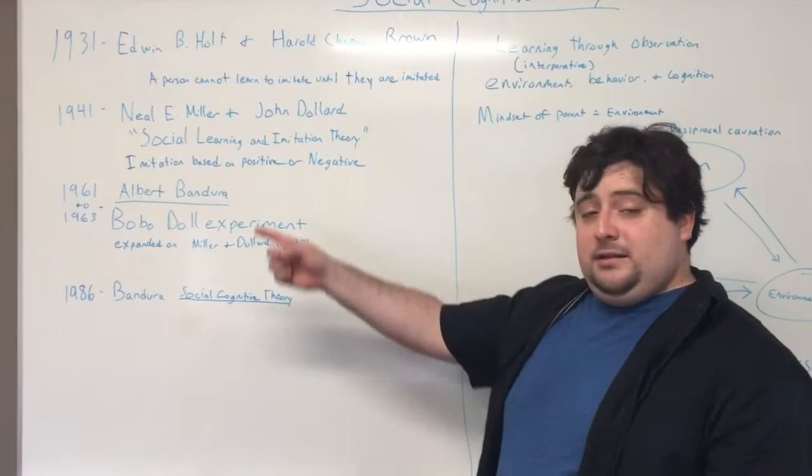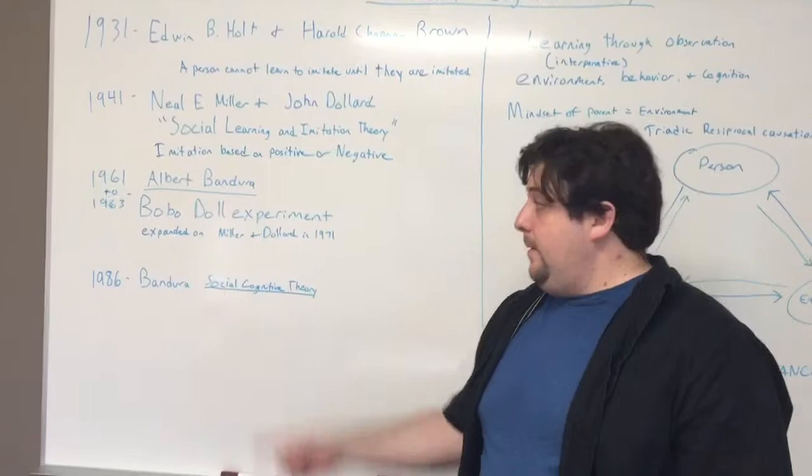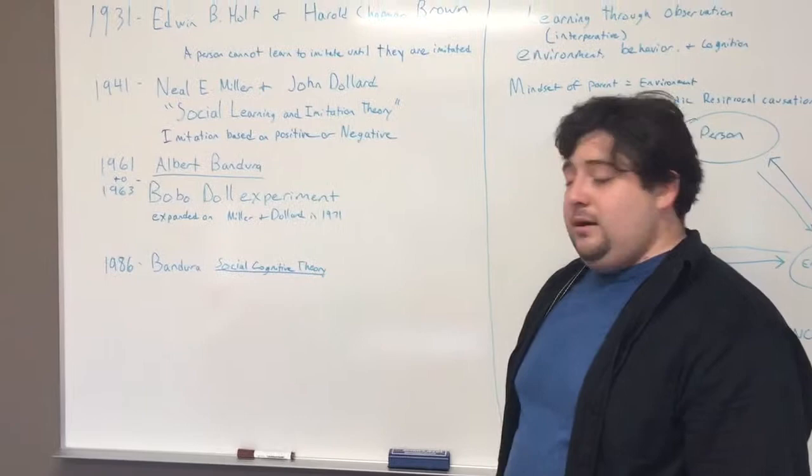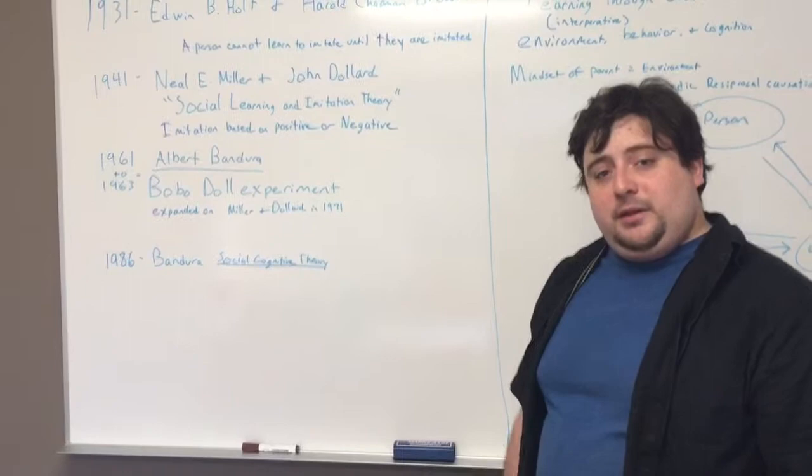They did this in two years, in 1961 and 1963, and then Bandura himself expanded on the work of Miller and Dollard in 1971. Bandura then published a paper in 1986 officially renaming the theory to social cognitive theory.